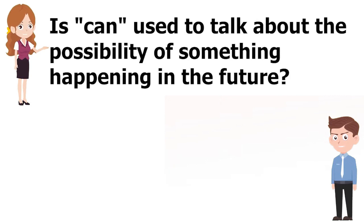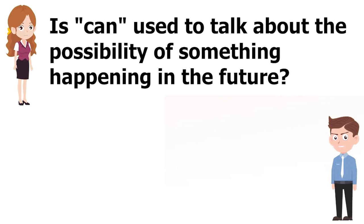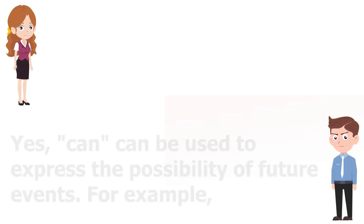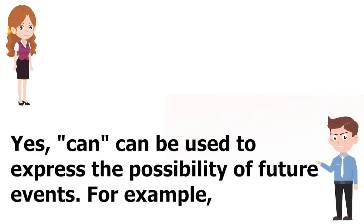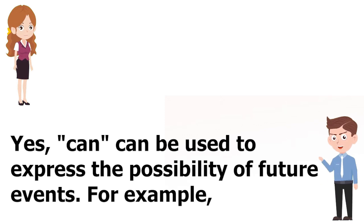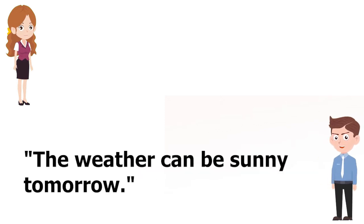Is "can" used to talk about the possibility of something happening in the future? Yes, "can" can be used to express the possibility of future events. For example, "The weather can be sunny tomorrow."